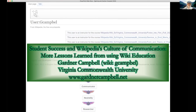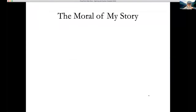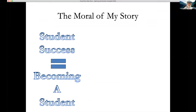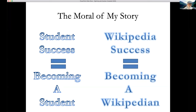I want to talk about the moral of the story first. Student success is about becoming a student — hopefully that tracks with taking courses, doing assignments, getting grades, getting degrees. But students are often very good at going through the motions without really becoming part of a community of learners. Likewise, Wikipedia success — I now firmly believe — is about becoming a Wikipedian: understanding plagiarism, policies, how to make a good article, how to submit it for review.